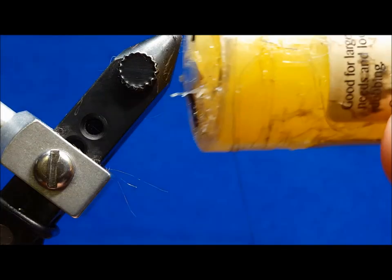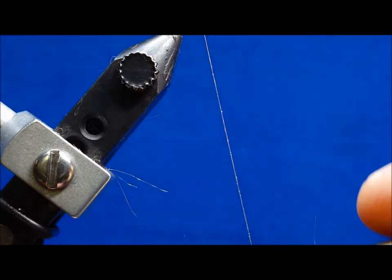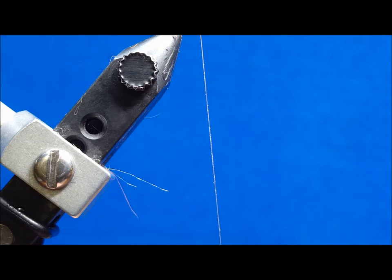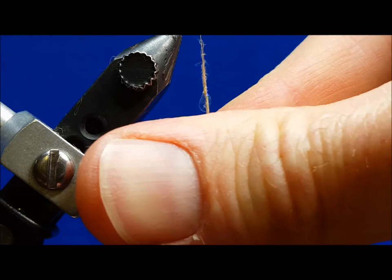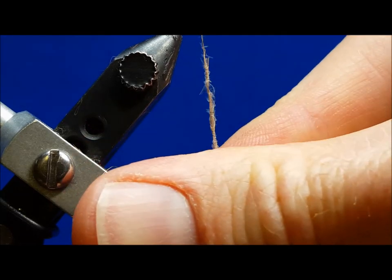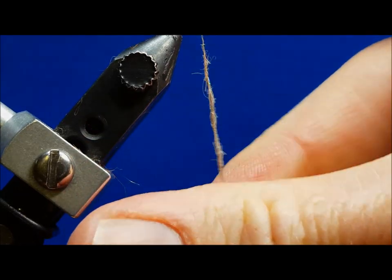Also, don't be afraid to increase the tack on your thread when working with furs and synthetics by using materials like Loon Swax. If you're a right-handed tier, your thumb should move toward the vise and your index finger away when creating a dubbing rope. The opposite is true for left-handers.